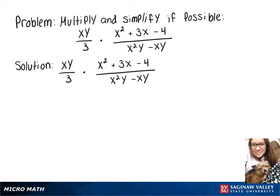We are going to do this multiplication problem and simplify it. So on top, when we multiply, we'll get xy times x squared plus 3x minus 4.